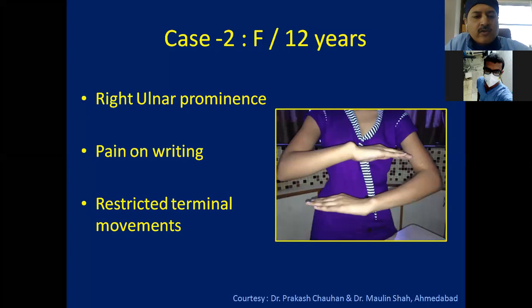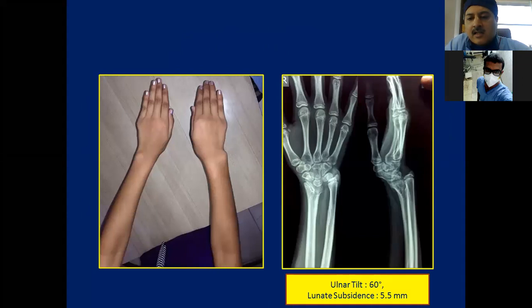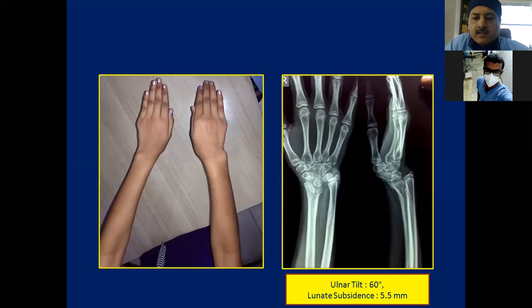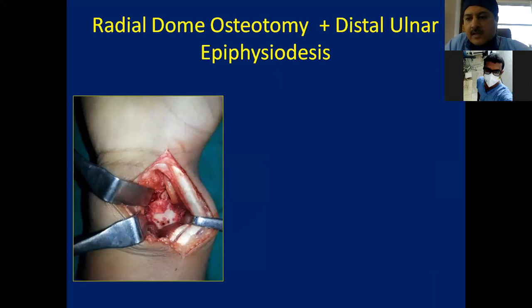Case 2: a 12-year-old girl with right ulnar prominence, pain on writing, and restricted terminal motion. X-ray shows the ulna crowding with the carpals, dorsal angular deformity of the distal radius. Lunate subsidence is more than 5.5 mm and ulnar tilt is 60 degrees — gross deformity. The child is skeletally immature and pre-menarchal. After resecting the Vickers ligament, we performed a dome osteotomy of the radius and distal ulnar epiphysiodesis — thinking that stopping distal ulnar growth would allow the ulna to reach a satisfactory position.